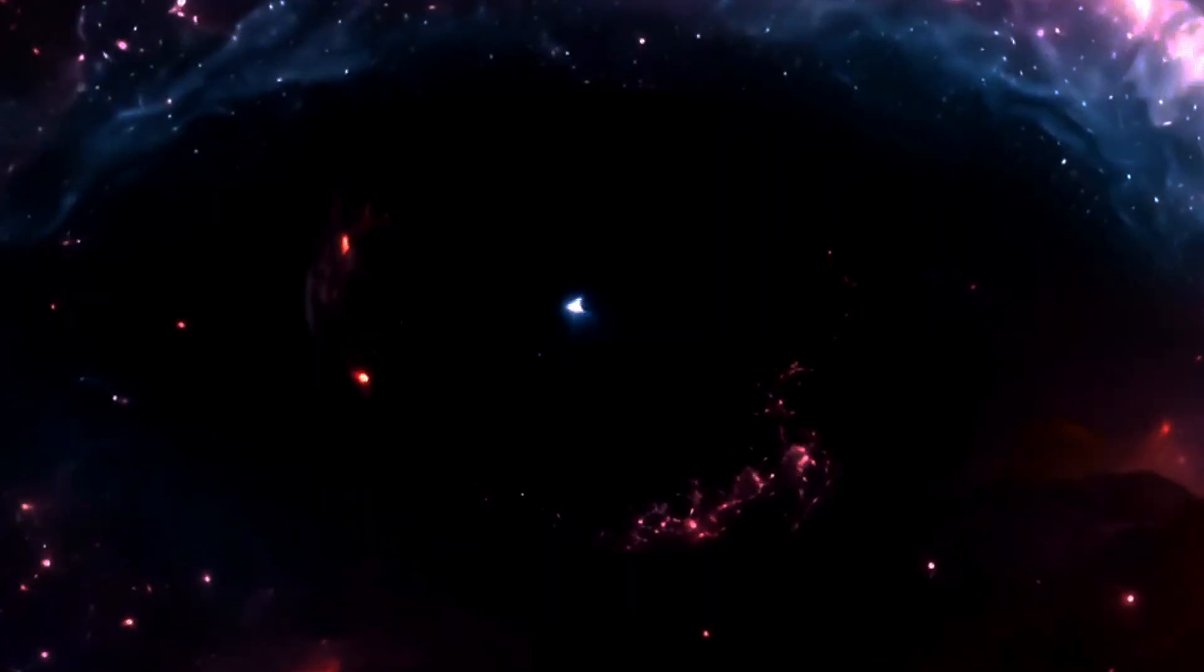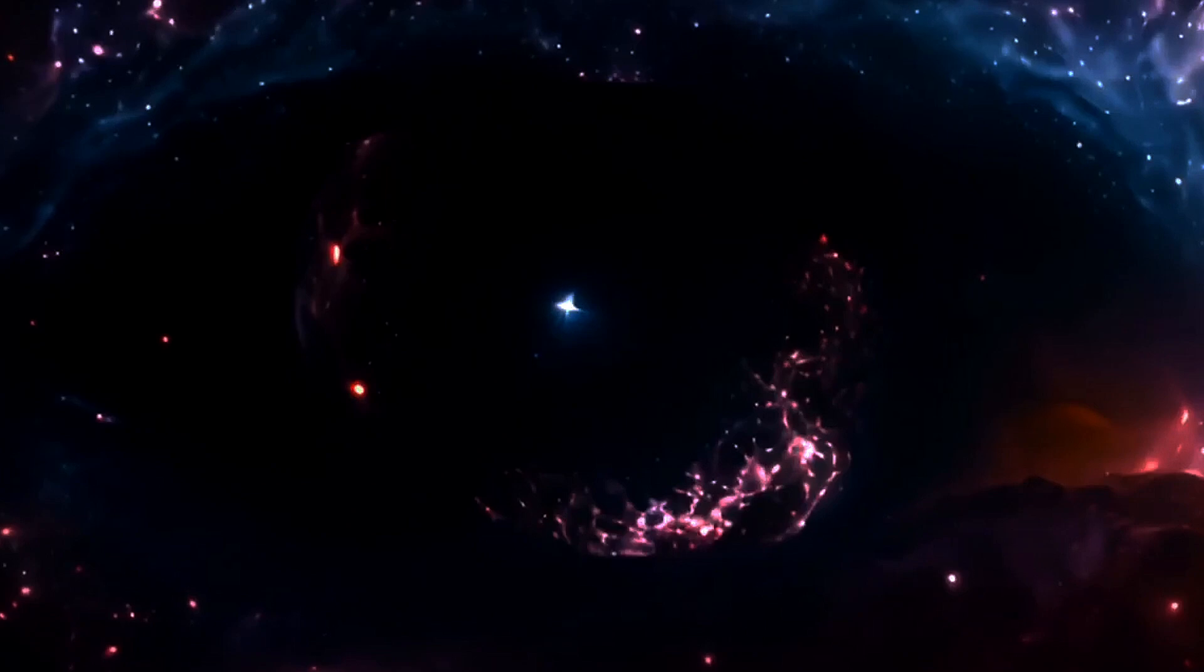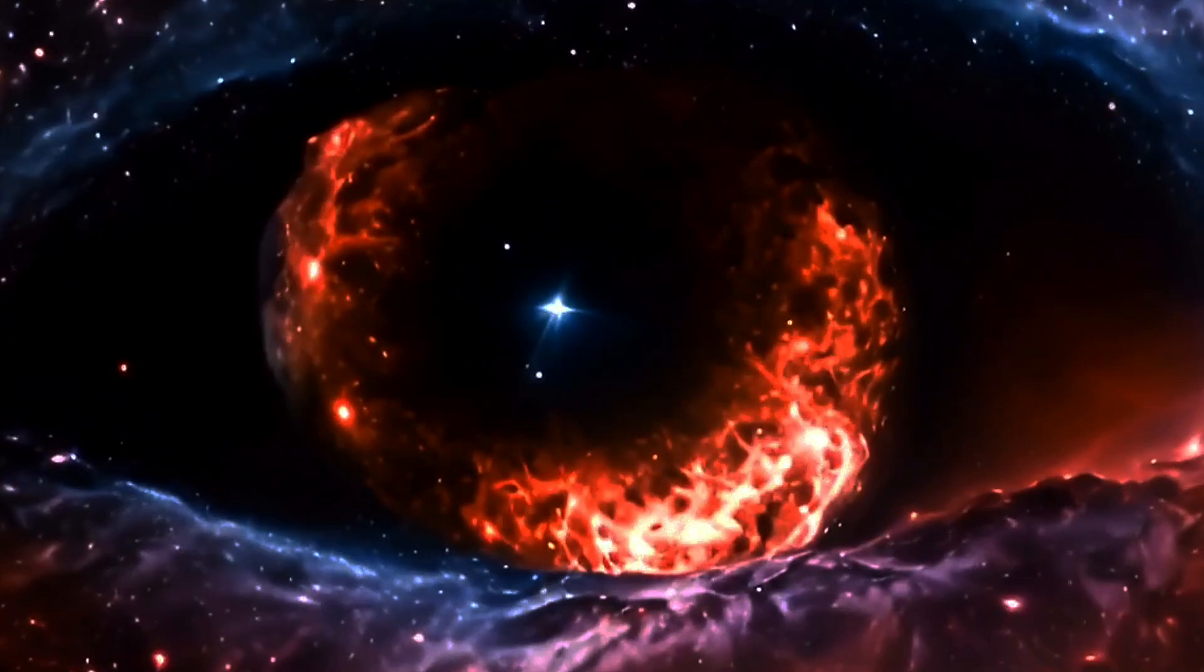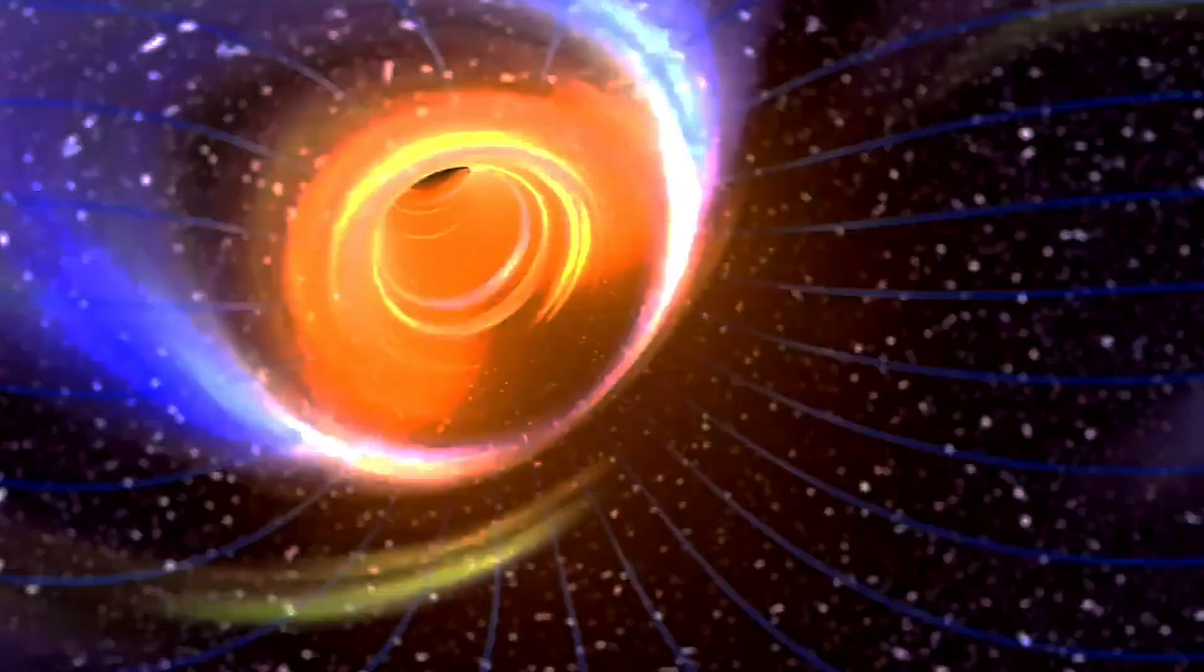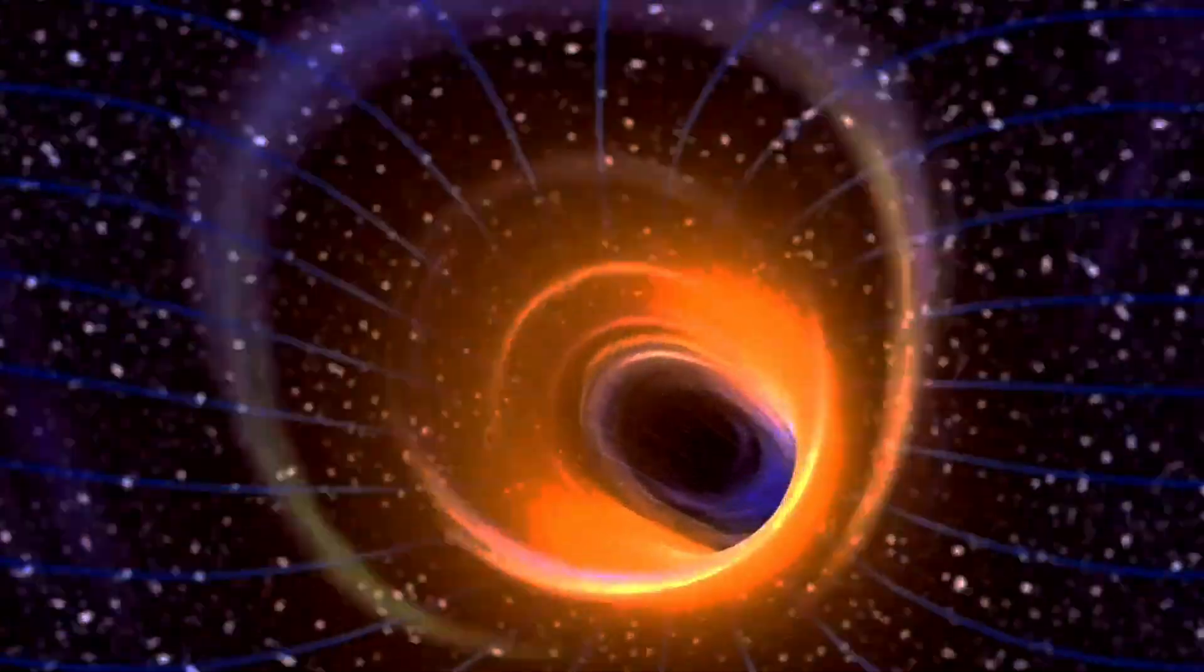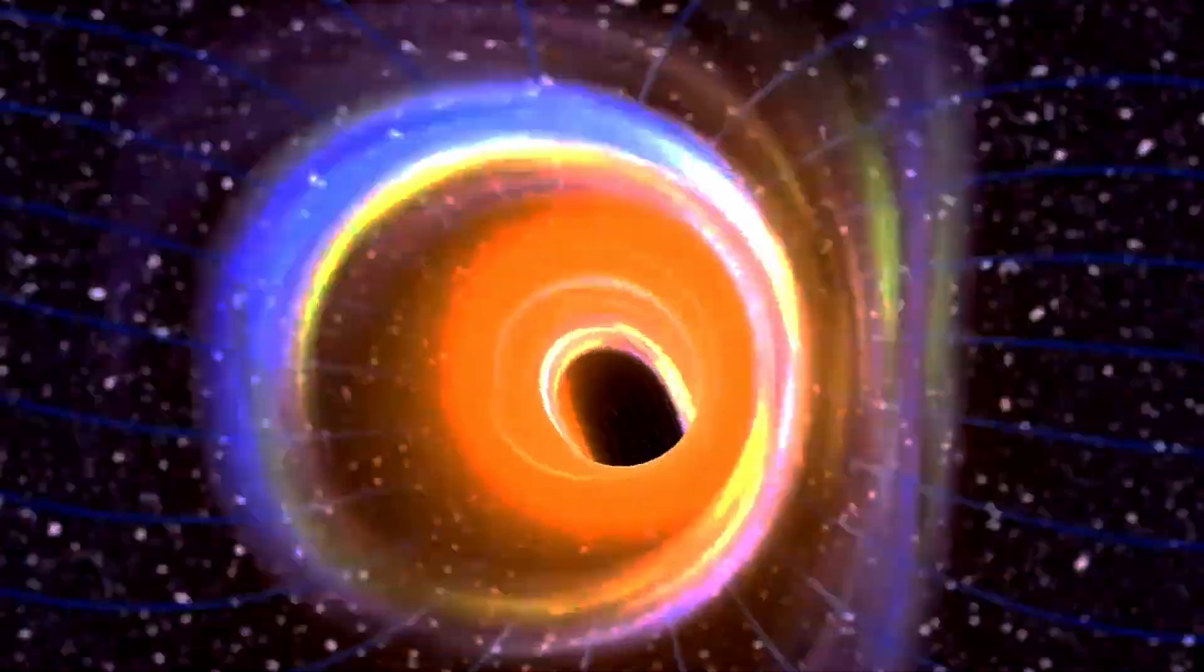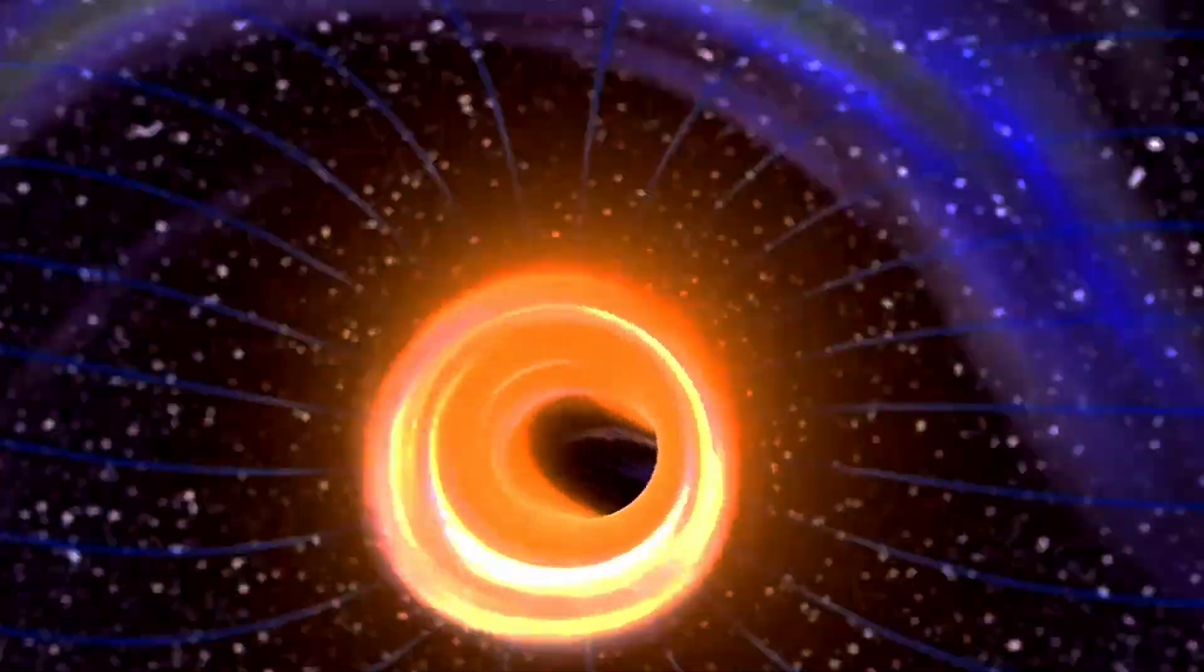Is the universe flat or curved? When we talk about the shape of the universe in physical cosmology, the shape refers to both its local and global geometry. Local geometry is about curvature, which is influenced by gravity, while global geometry deals with topology, essentially how the universe is connected on a grand scale.